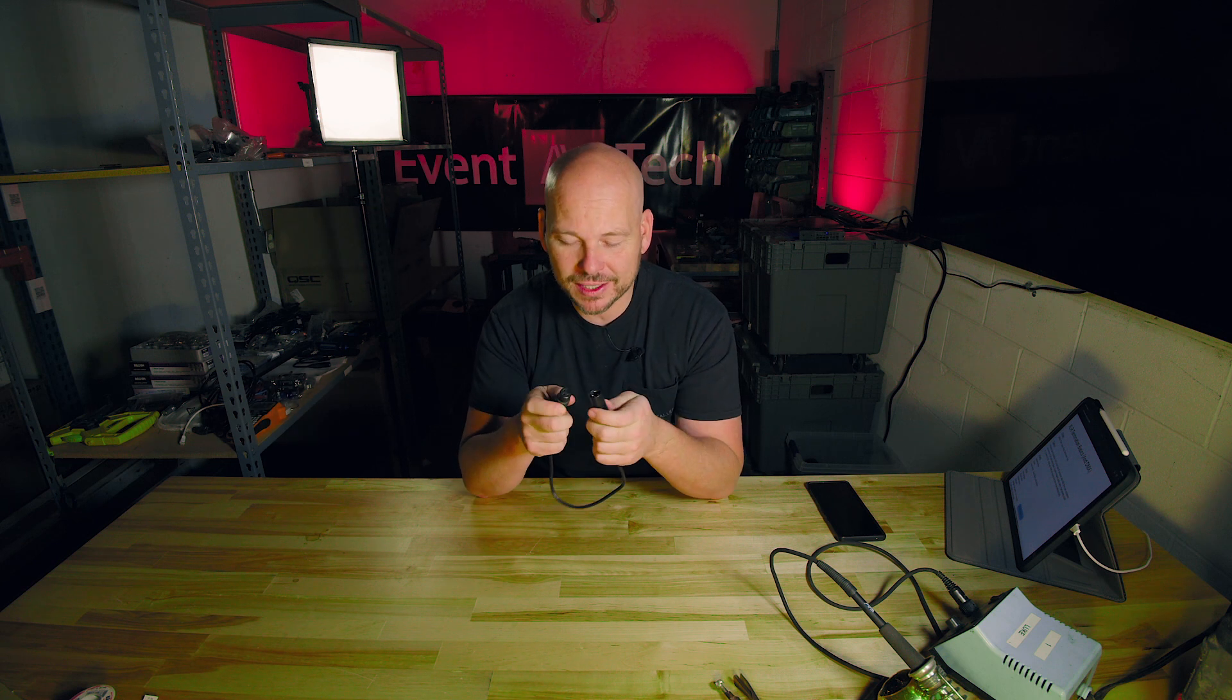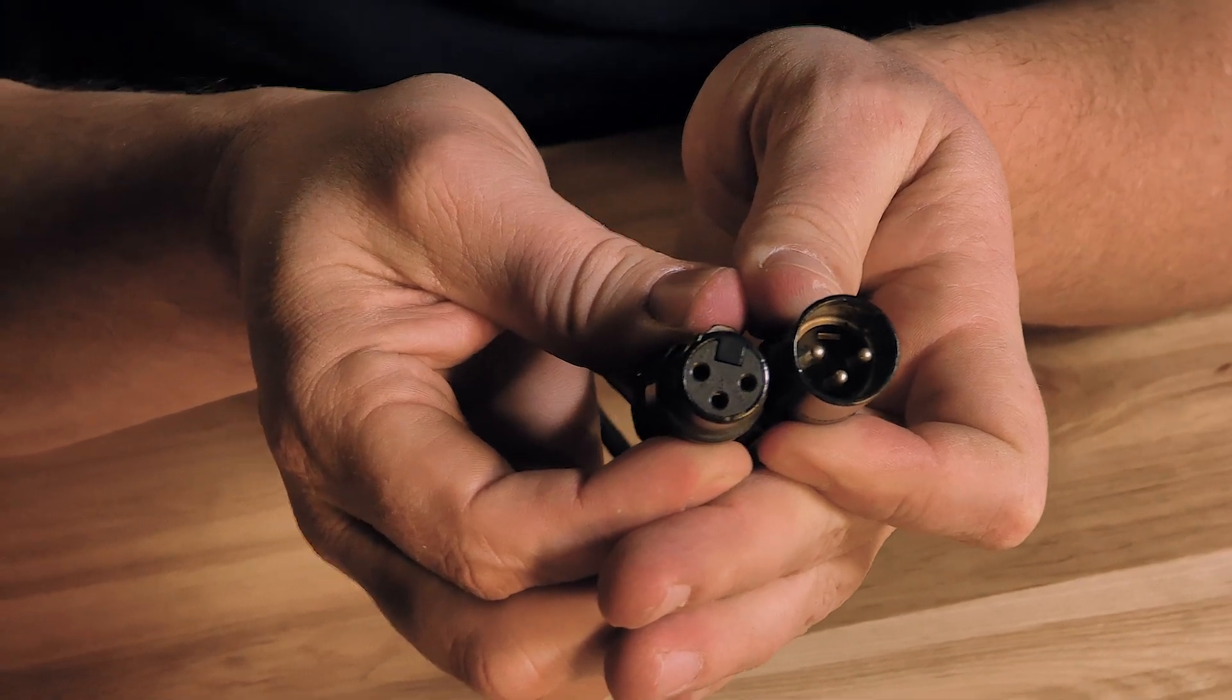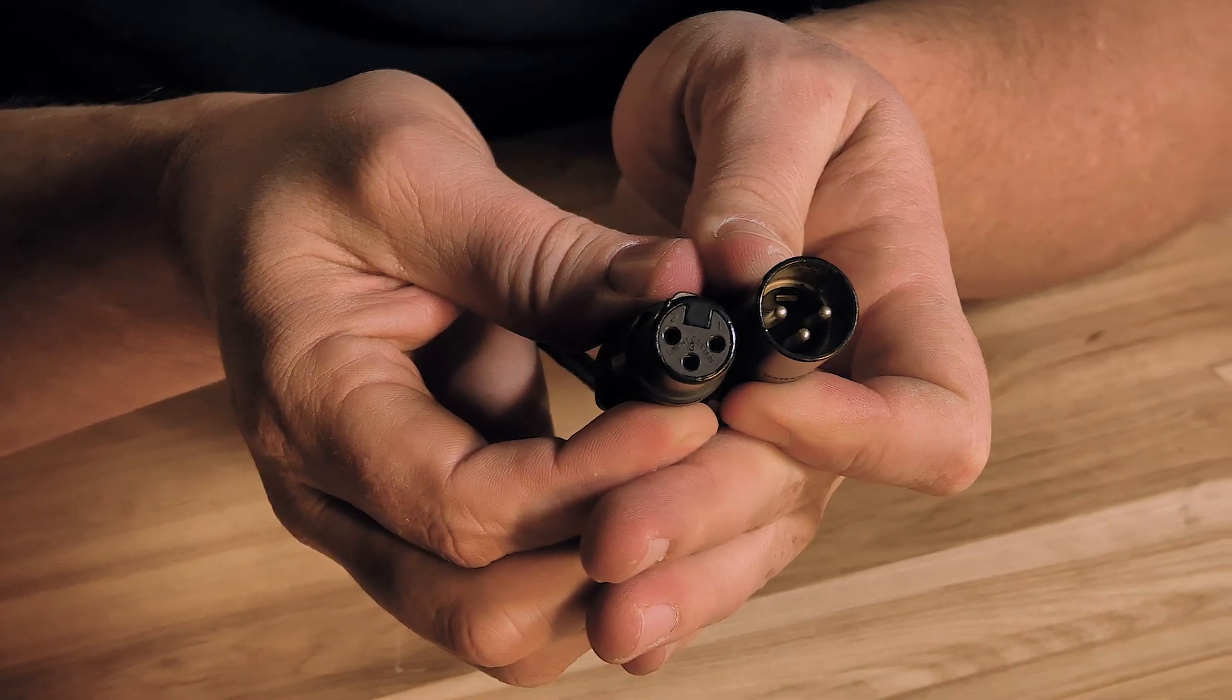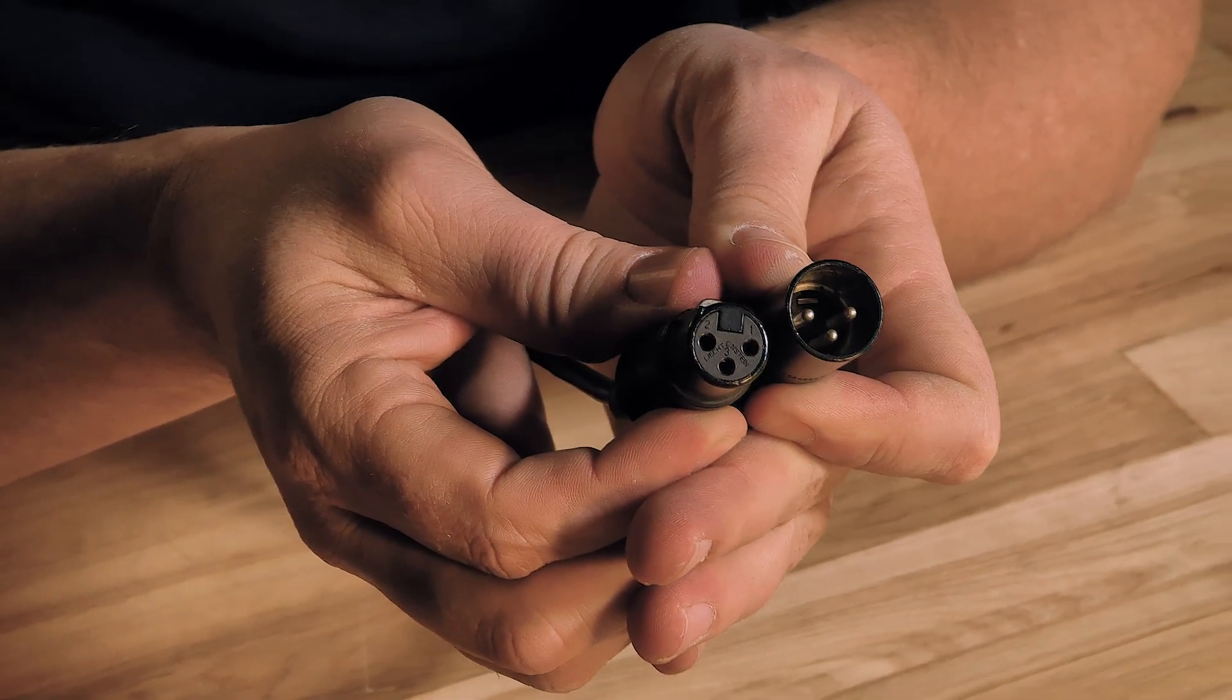When people say XLR they're most commonly referring to an audio cable, but XLR actually just means a multi-pin connector with latching devices, which is what professional audio normally uses. We commonly use a 3-pin XLR for audio like you see here, 3-pin DMX which we're going to talk about, or 5-pin DMX. Those are our most common ones.